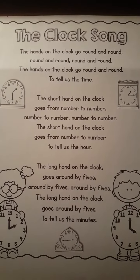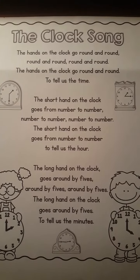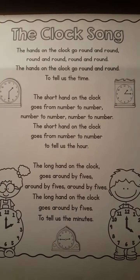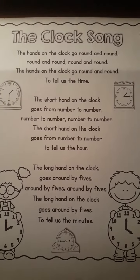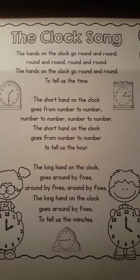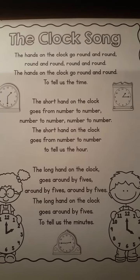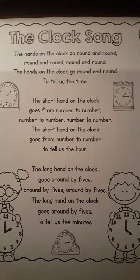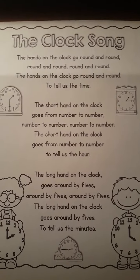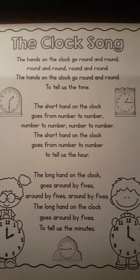The short hand on the clock goes from number to number to tell us the hour. The long hand on the clock goes around by fives, around by fives, round by fives.